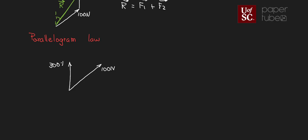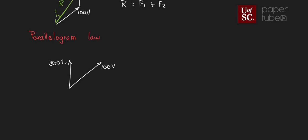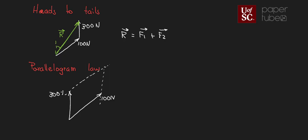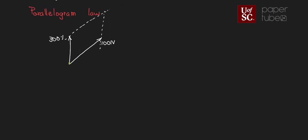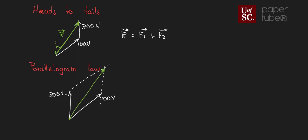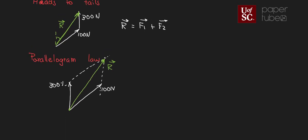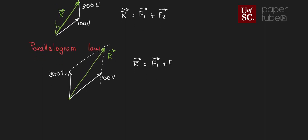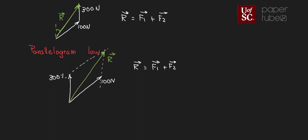To apply the parallelogram law, you create a parallelogram: take a line parallel to the 100-newton vector and place it at the head of the other vector, and do the same with the 300-newton vector. The resultant vector R goes from the tails of the two original vectors to the opposite corner of the parallelogram. So vector R equals F1 plus F2. By forming that parallelogram we take care of both the magnitude and direction of the forces.